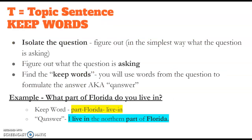So again, in the Topic Sentence, you need to look for keywords that are found in the prompt before you start writing. Make sure you isolate the question. Figure out in the simplest way what the question is actually asking. Figure out what the question is asking by looking for those keep words. What are words you're going to keep from the topic, from the actual prompt that you're given?